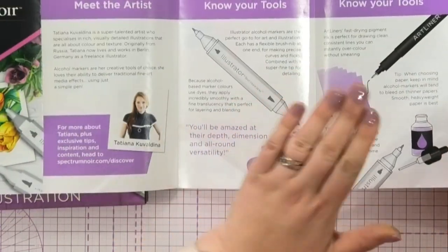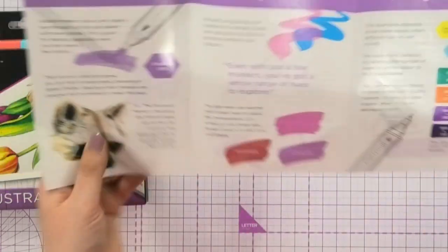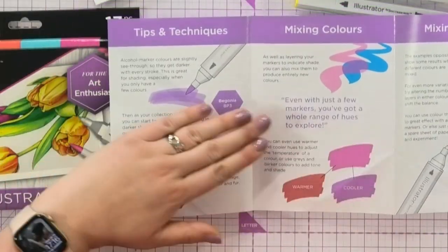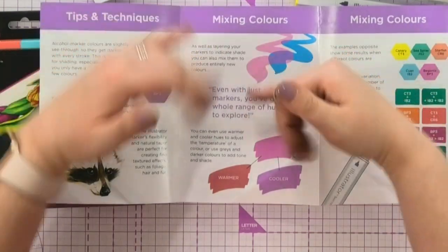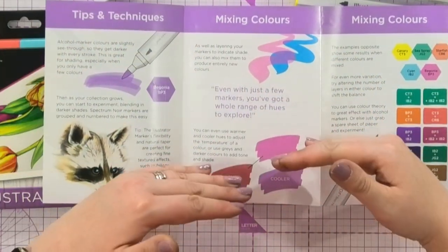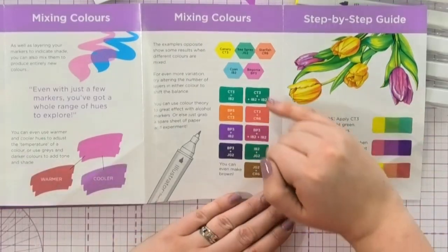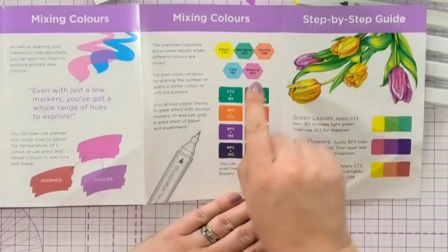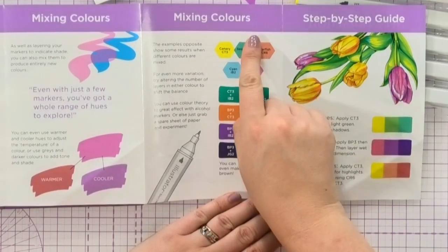Once you've learned about all the tools in the kit, you're then going to learn about color theory and layering up color to get a deeper color, about making your colors warmer and cooler by adding a bit more into them, and how you can create all of these colors using the shades that you've got in the set.